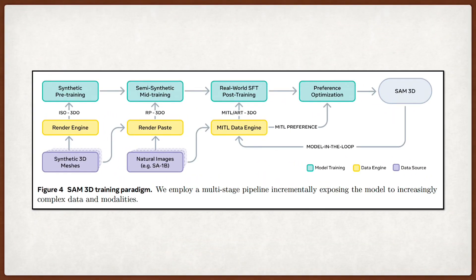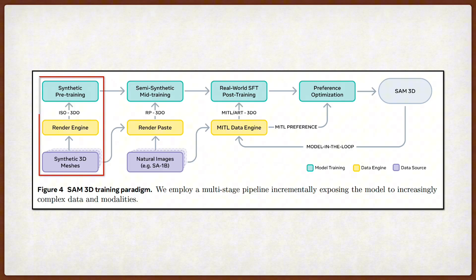Now, the architecture is solid, but the real contribution of this paper is how they train it. Because good 3D data, paired with images, basically does not exist at this scale. They use a multi-stage training recipe that starts with synthetic pre-training, where they use renders of isolated objects from datasets like Objaverse to learn the basics of shape and texture.